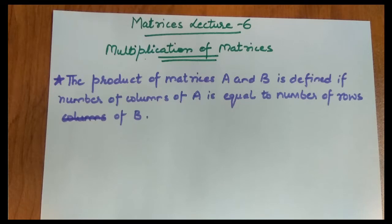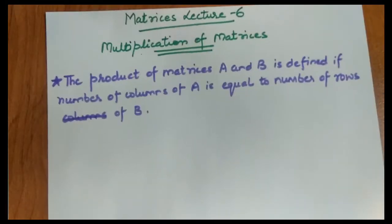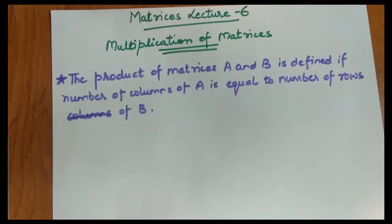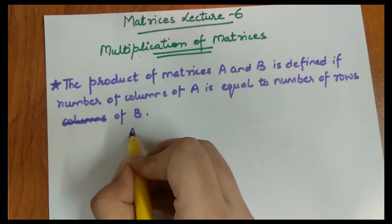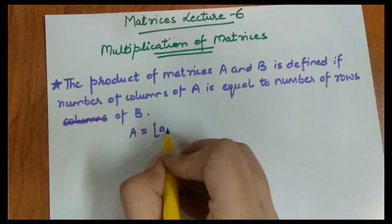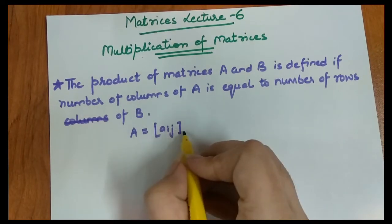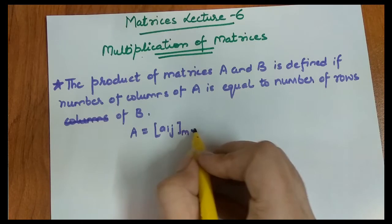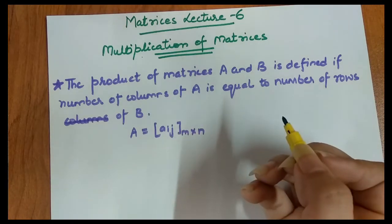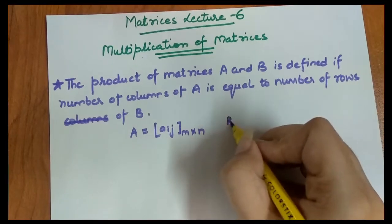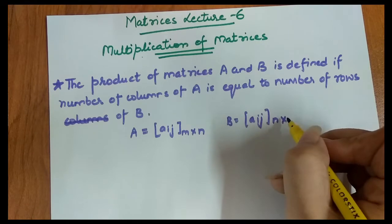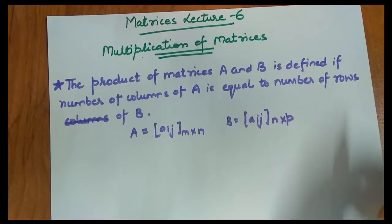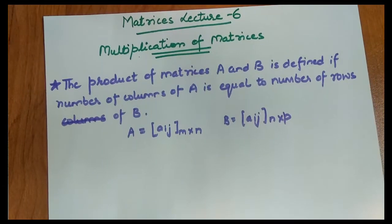We have written the definition, so in mathematical form I will explain. For example, we have a matrix A with elements i,j, so its order is m cross n, meaning number of rows is m and number of columns is n. Similarly we have a matrix B with number of rows n and number of columns p, like n cross p is the order.